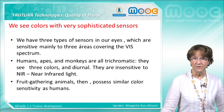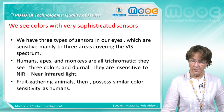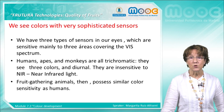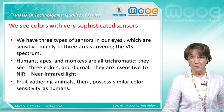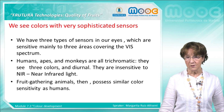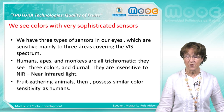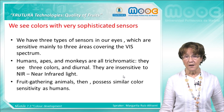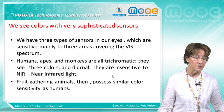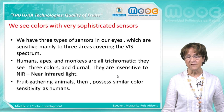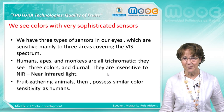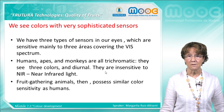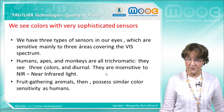We can see those colors with very sophisticated sensors in our eyes. We have three types of sensors in our eyes which are sensitive mainly to three areas covering the whole visible spectrum. Humans, apes, and monkeys are all trichromatic — they see three colors and are diurnal, so they work and eat during the day. They are insensitive to NIR near-infrared light, whereas night animals are sensitive to NIR. We are trichromatic, and all these animals that precede us in evolution are day animals that ate tree leaves and fruits.